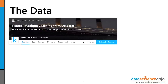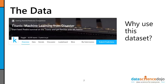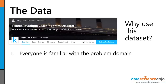So let's talk a little bit about the data. The first question you may ask is, why use this data set? The data set in question is the Kaggle competition's Titanic machine learning from disaster data set. We use this data set extensively, and we do this for two primary reasons. One, everyone is familiar with the problem domain. I've literally asked this question to hundreds of people — how many of you are not familiar with the Titanic? And universally, nobody raises their hand. So everyone's familiar with the problem domain, which is important when you have diverse audiences from different industries.